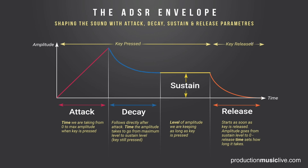Sustain level ends as soon as our hand is leaving the piano key — the key is released. What follows is the so-called release time, bringing whatever sustain level we had before back to zero. No sound. In the beginning we have no sound, in the end we have no sound, and in between we have ADSR.